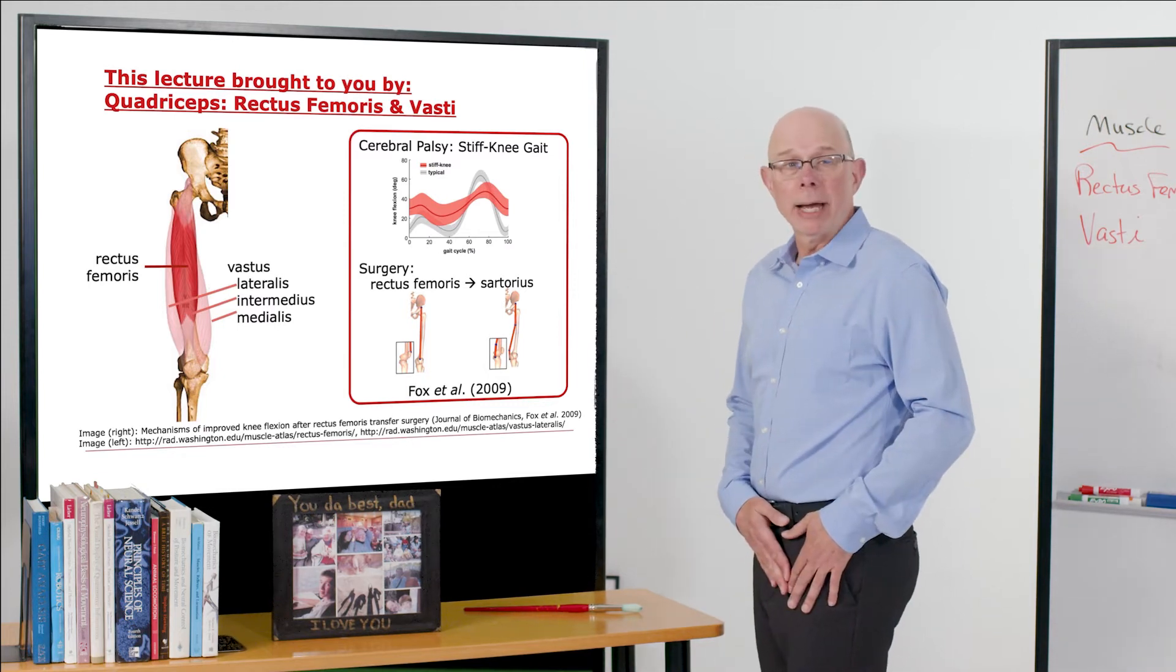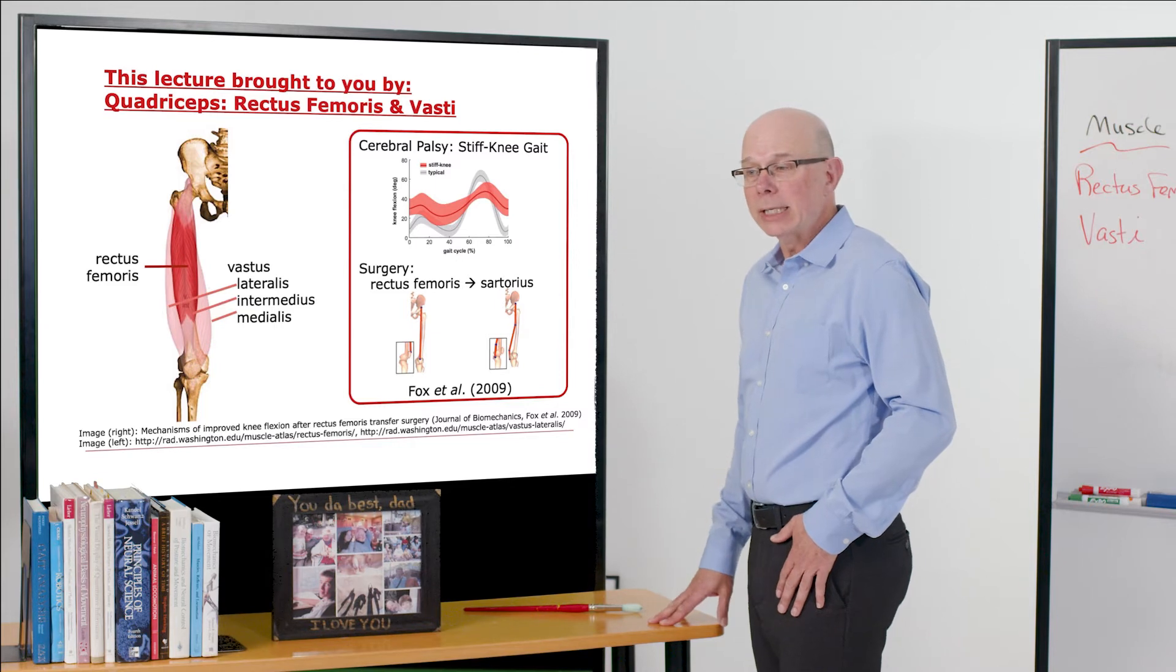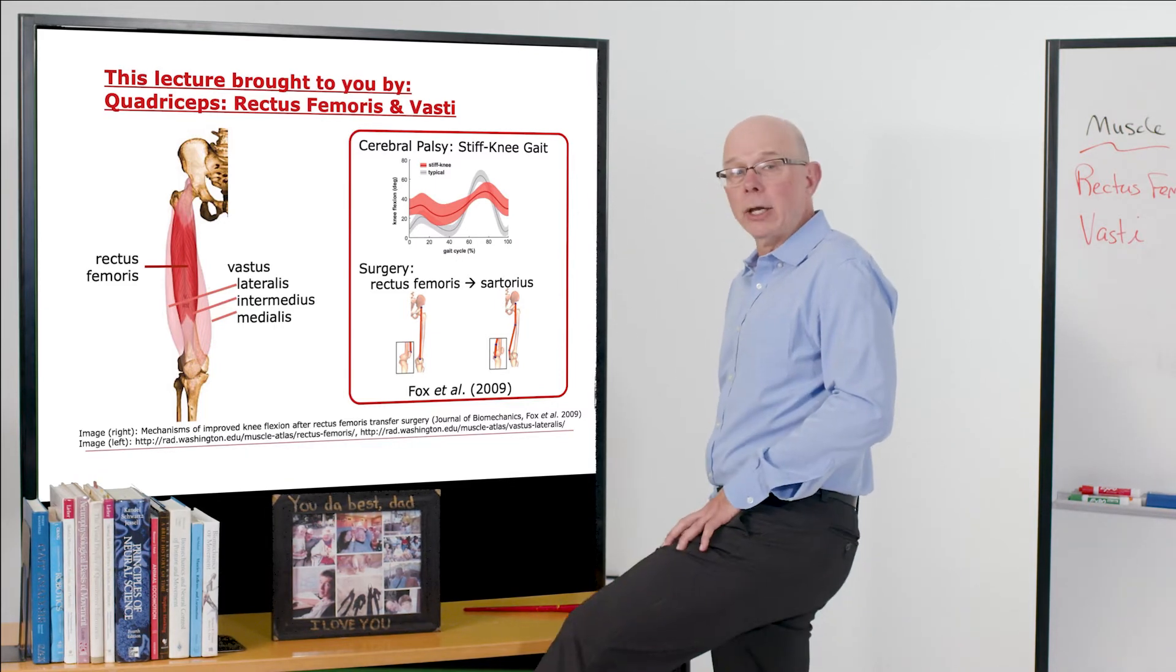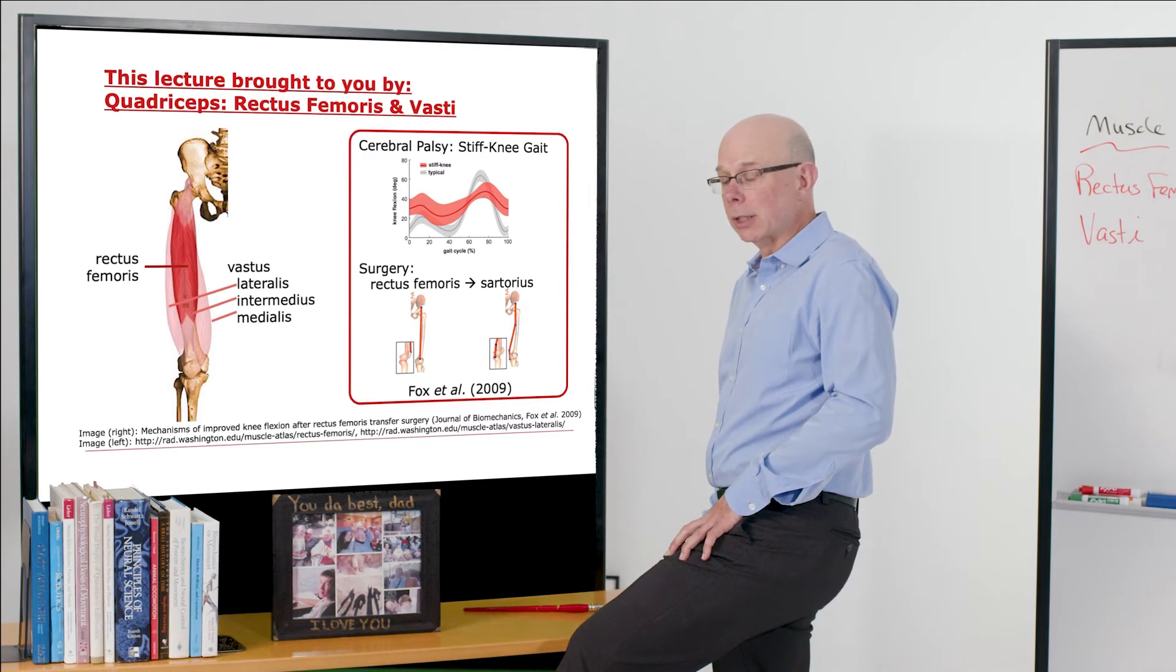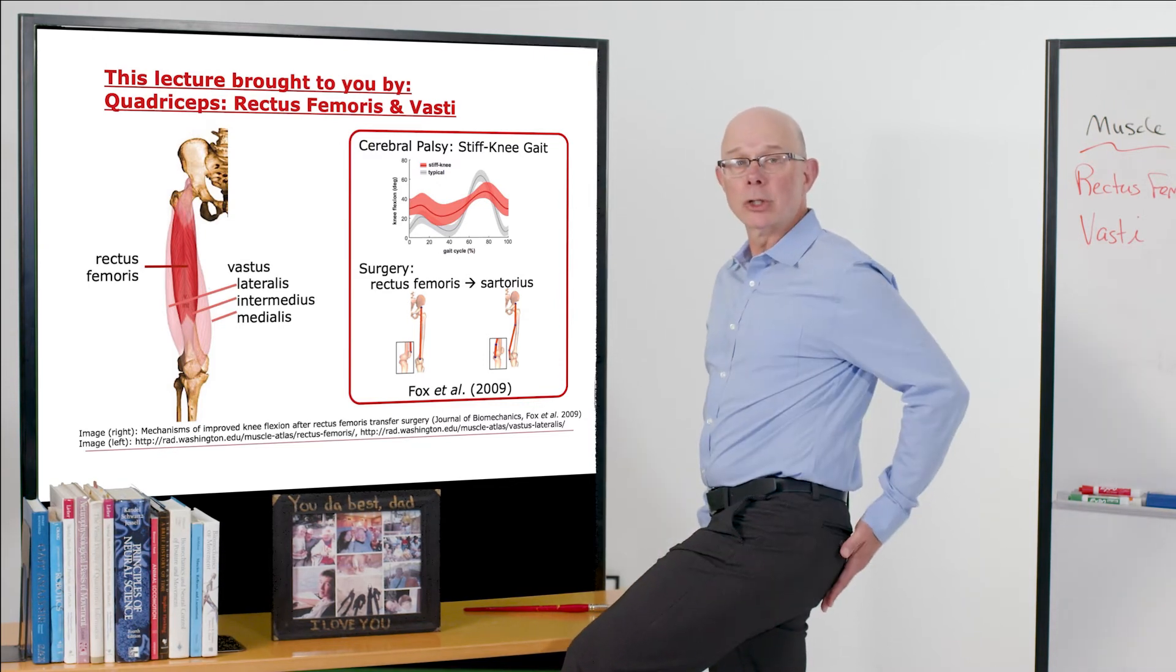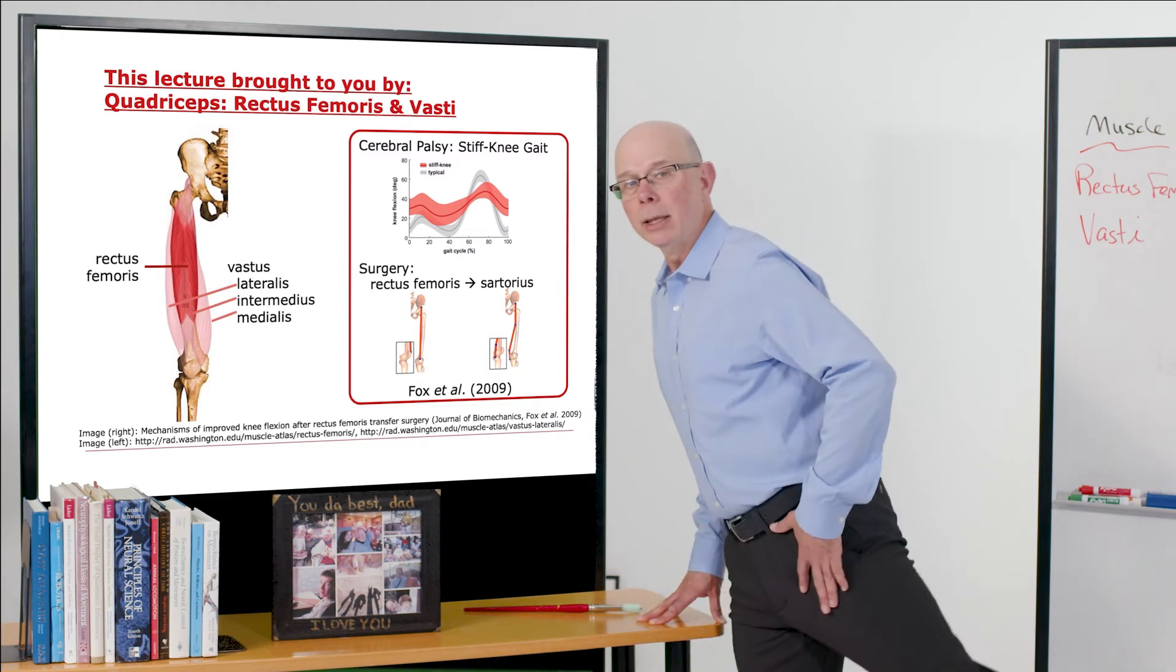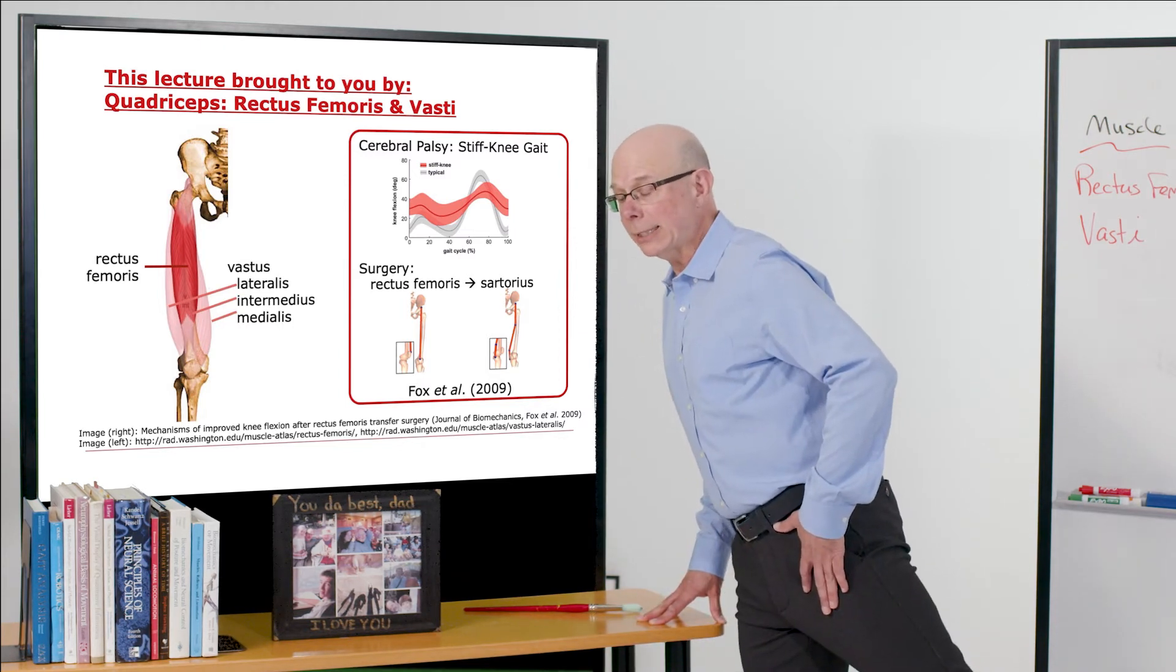What's interesting about the rectus femoris is that because it crosses both those joints, it's quite good at swinging your leg forward during the swing phase. That's opposite to the hamstrings, also a two-joint muscle that crosses behind the hip and behind the knee and produces an extension of the limbs.